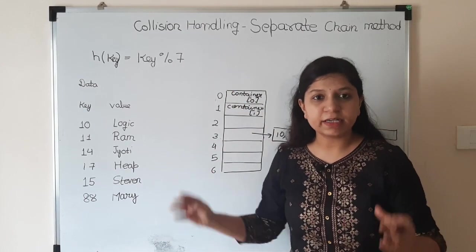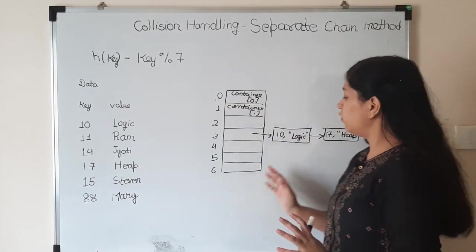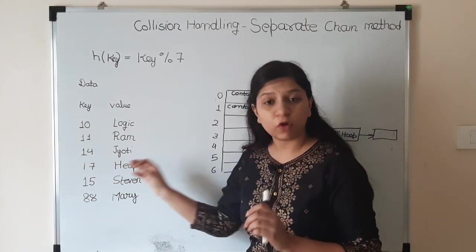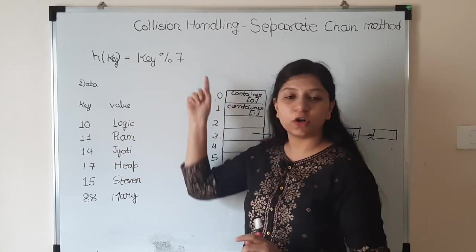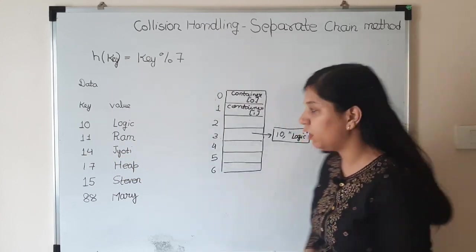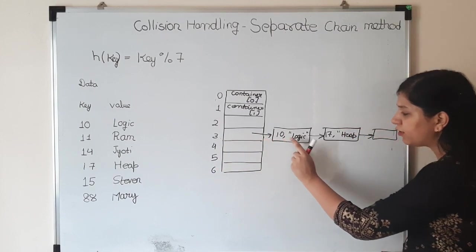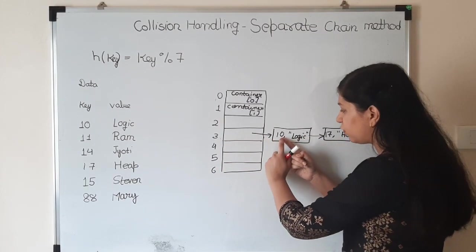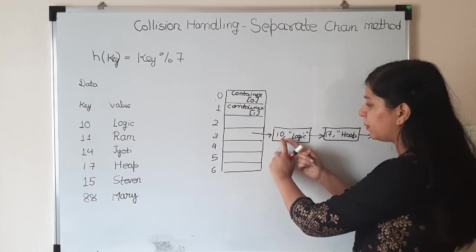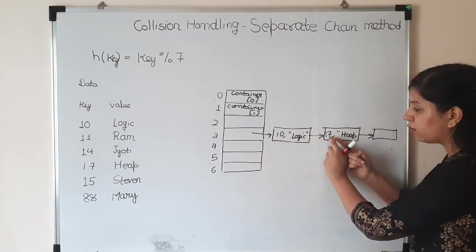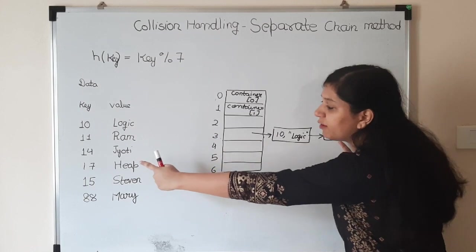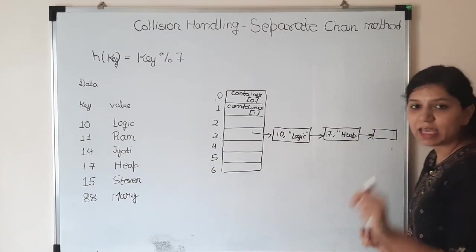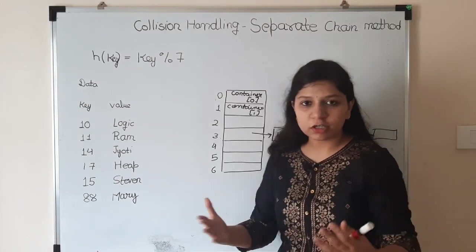This is called Separate Chain method. Now suppose you need to search for value 17 Heap. You'll do 17 modulo 7 which gives 3. You'll go to index 3 and start traversing all the values. You'll compare with each value - if the keys match, here it is and the value is Heap. That's how you search.